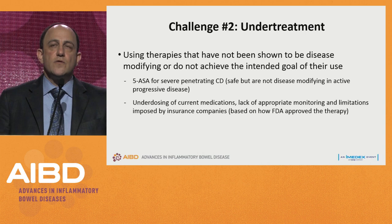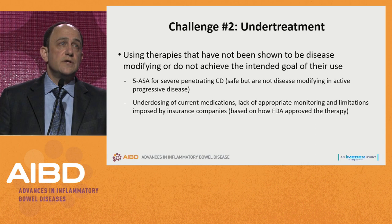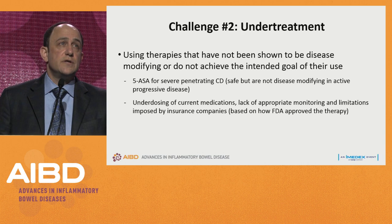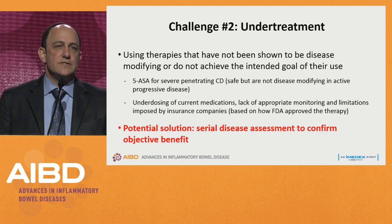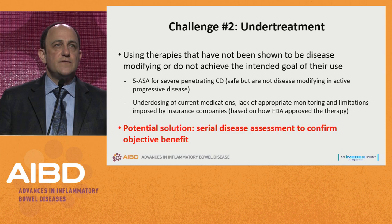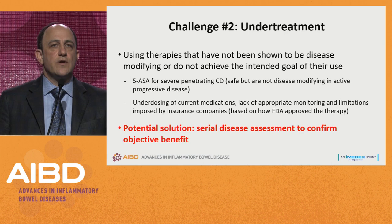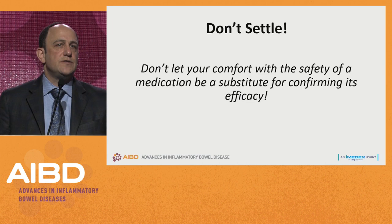We also appreciate underdosing of current medications. Multiple analyses demonstrate that when we've used thiopurines, we've often been underdosed, and when using biologics, unfortunately we aren't getting enough drug into the patient. How do you approach undertreatment? For every treatment you use, you must do serial assessment and make sure it's getting you what you want — whether that's 5-ASA for mild Crohn's or dietary management. Objective assessment to know you're making progress is critically important. Don't settle.